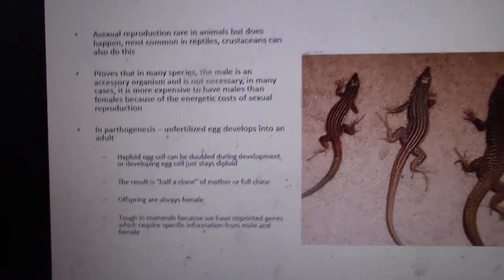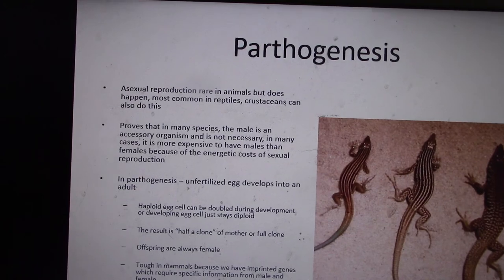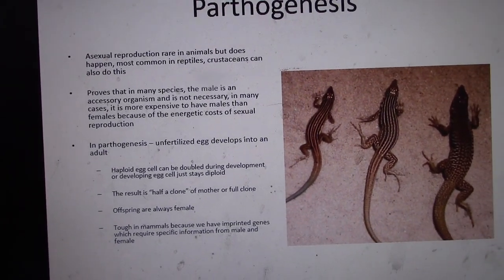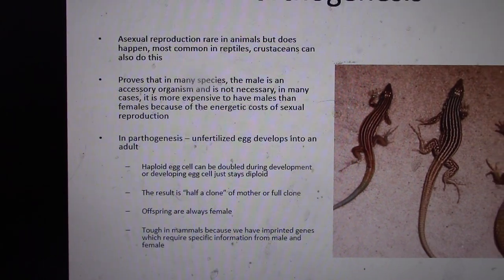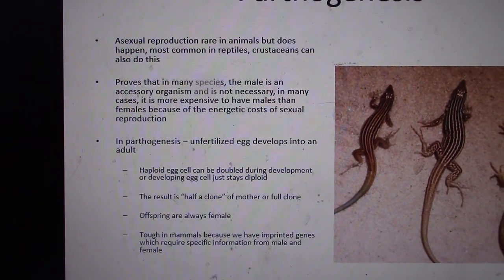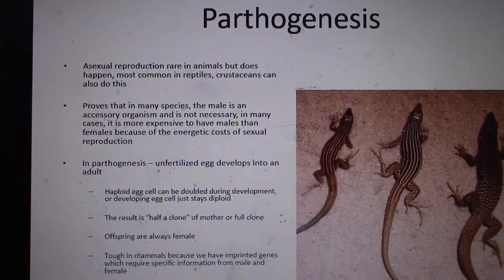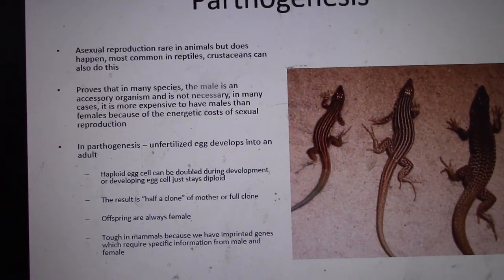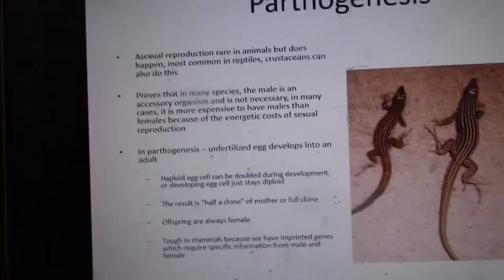It's a bit tough in mammals because we have imprinted genes. So you have to have a gene that comes from a male and comes from a female to ensure sexual reproduction. It's kind of like a fail-safe mechanism that evolution has given us. Insulin-like growth factor, IGF, is a good example of an imprinted gene where you have to have a copy of a male's IGF and a copy of a female's IGF in order to produce viable offspring.